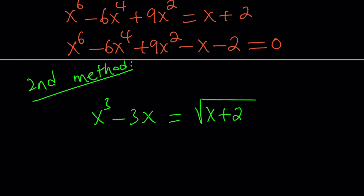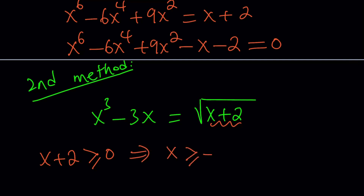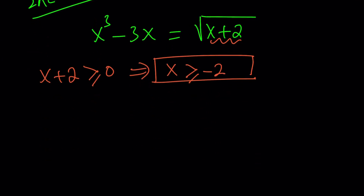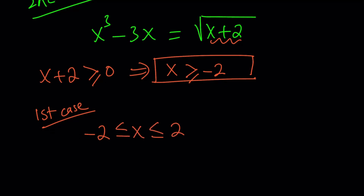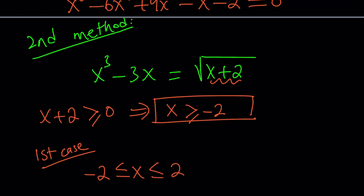First, let's establish that the expression inside the radical must be greater than or equal to 0, so x plus 2 must be greater than or equal to 0. This implies x is greater than or equal to negative 2 — that's a requirement, and for any other values we don't have real solutions. Under those conditions, we can split the problem into two cases. For our special substitution, let's consider Case 1: assume that x is between negative 2 and positive 2. I'll explain why we restrict x to that interval shortly.